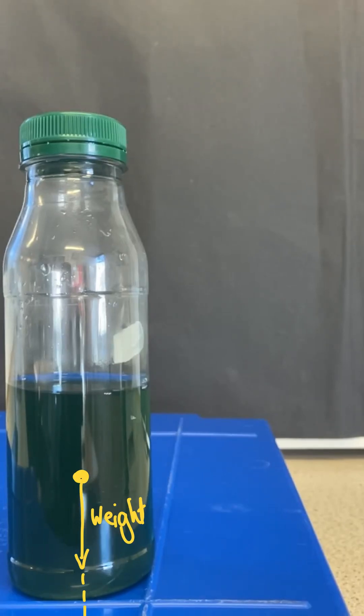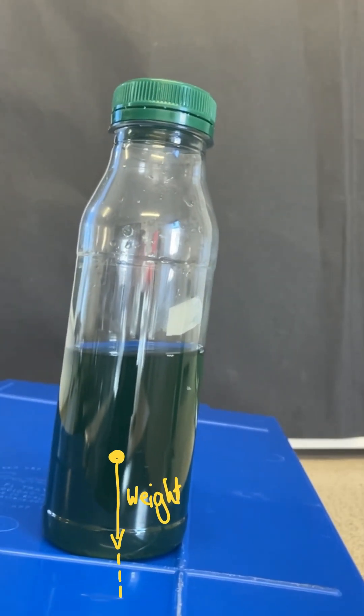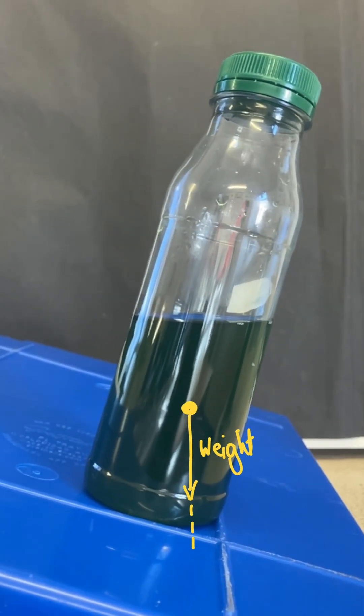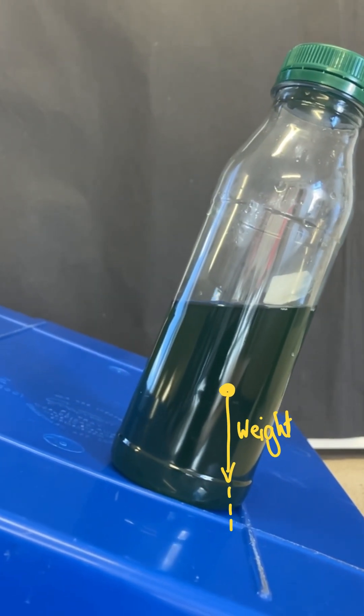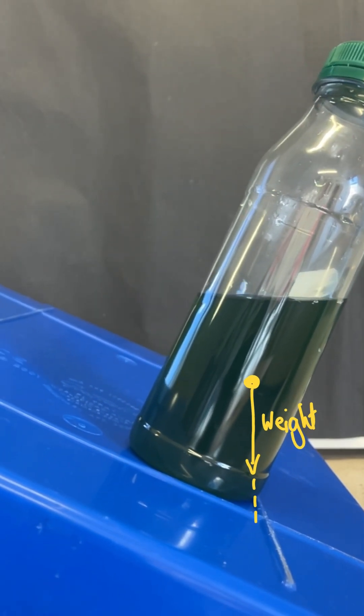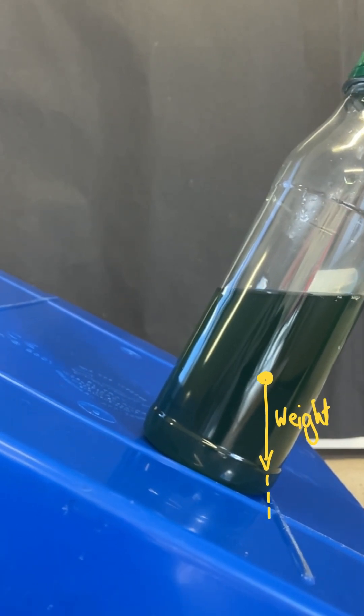Because the centre of mass is much lower, we'll find that we need a much larger angle for the line of action of the weight to be outside of the base of the bottle, and therefore for it to topple. And that's why it topples at a larger angle. So hopefully now you understand the order in which the bottles topple.